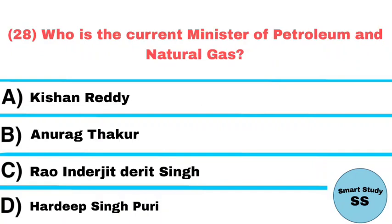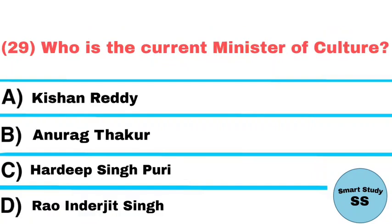Question number 28: Who is the current minister of Petroleum and Natural Gas? Answer: Hardeep Singh Puri. Question number 29: Who is the current minister of Culture? Answer: Kishan Reddy.